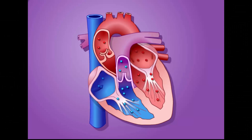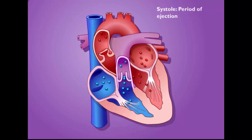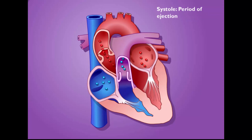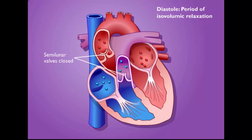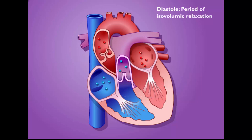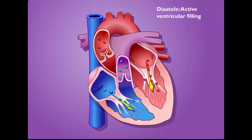Ventricular contraction causes the atrioventricular valves to close, signaling the beginning of ventricular systole. The semilunar valves remain closed during this period. Continued ventricular contraction increases pressure above that in the aorta and pulmonary trunk, causing the semilunar valves to open. When the ventricles relax and pressure drops, blood flowing back causes the semilunar valves to close — beginning ventricular diastole. When pressure in the ventricles drops below atrial pressure, the AV valves open and blood flows in passively, accounting for most ventricular filling. The atria then contract to complete ventricular filling.